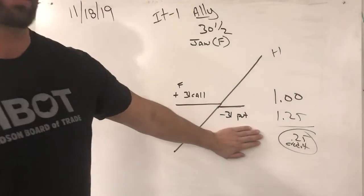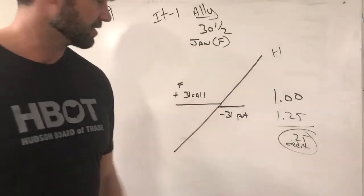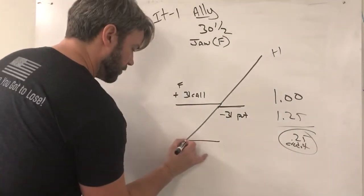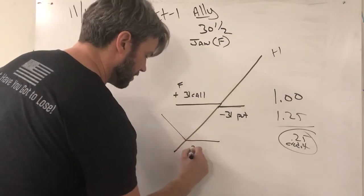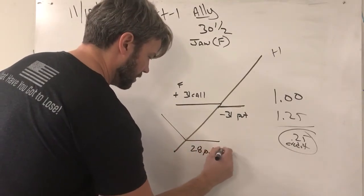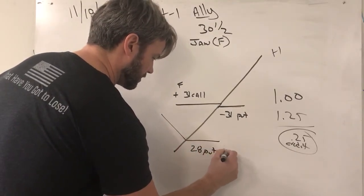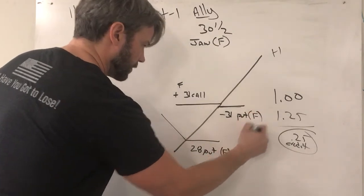I don't like my students to sell puts naked. So I'm gonna take this twenty-five cent credit and guess what we can buy for twenty-five cents? The twenty-eight put in January also, symbol F.